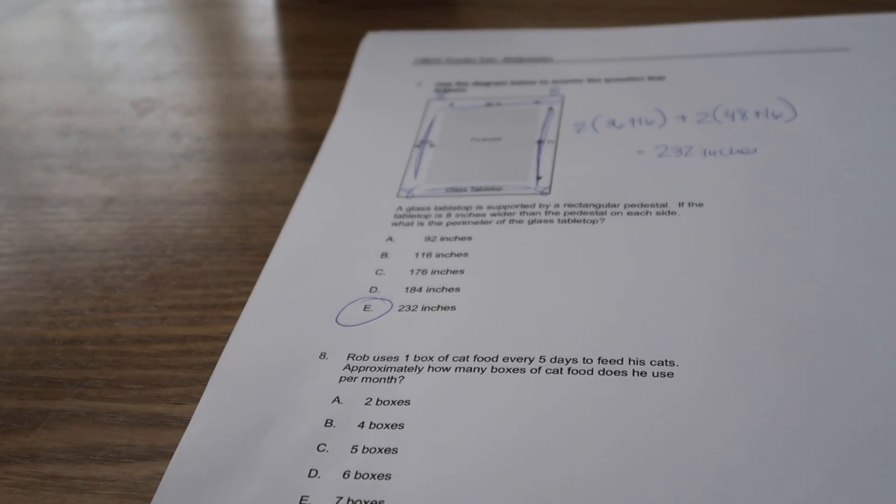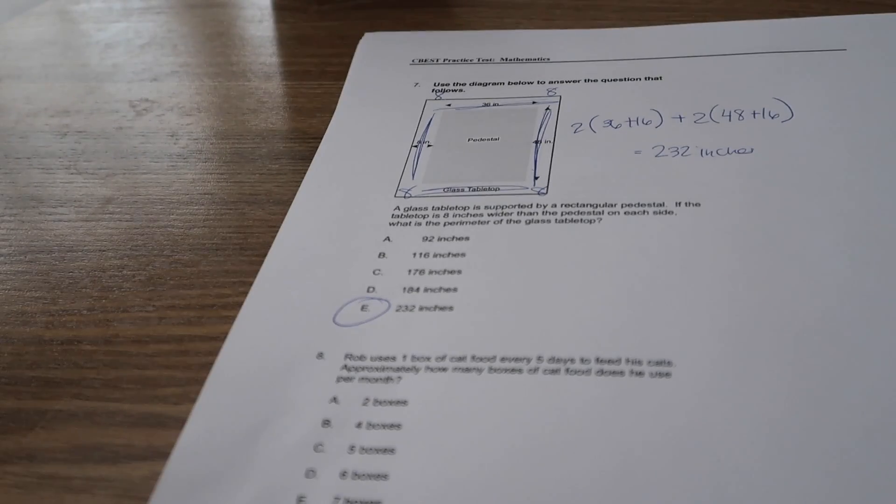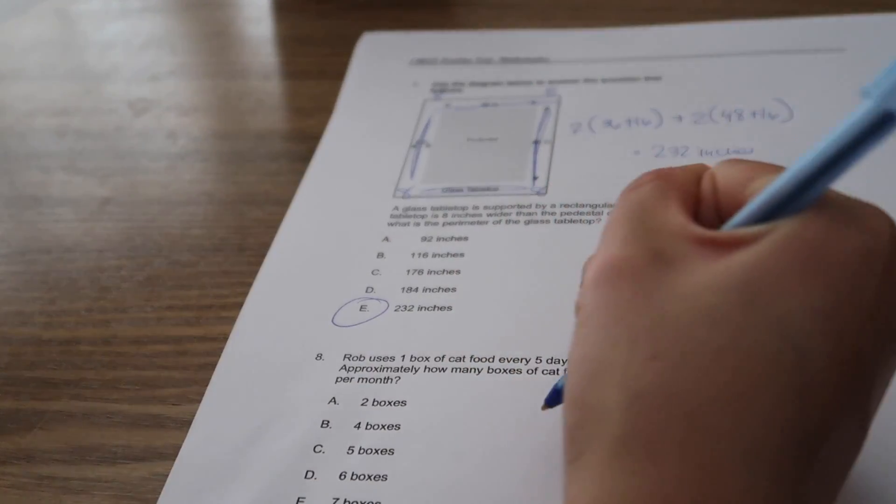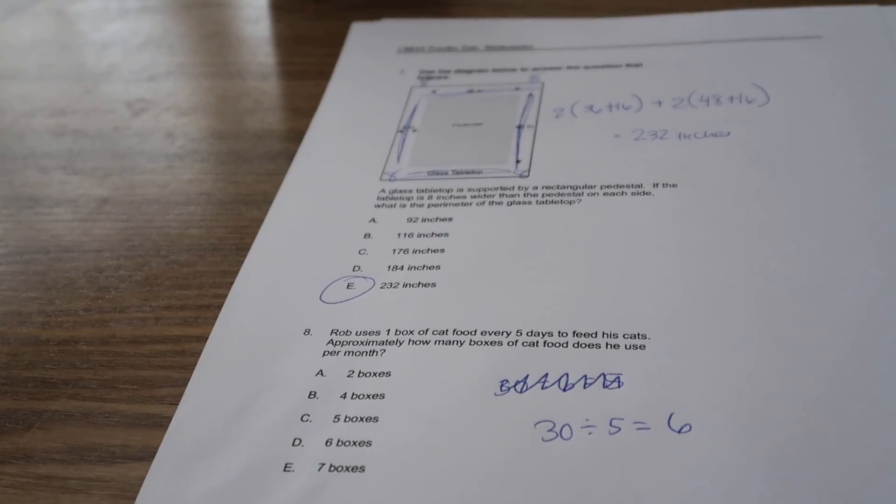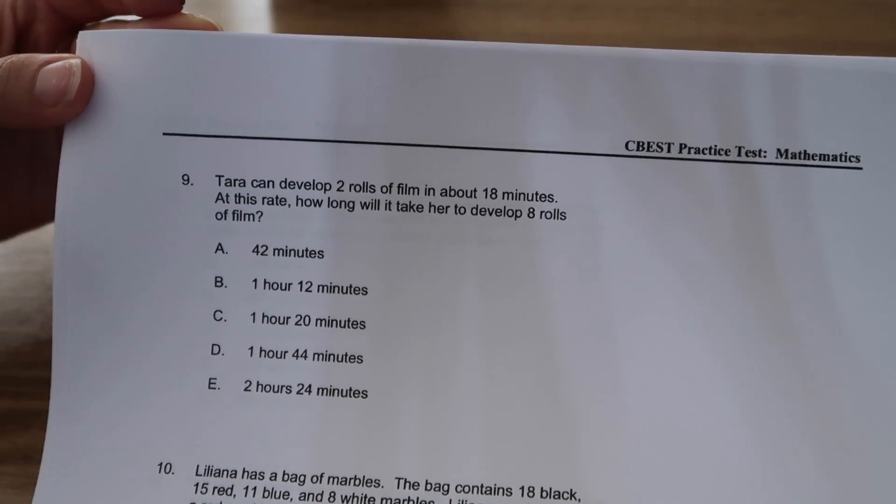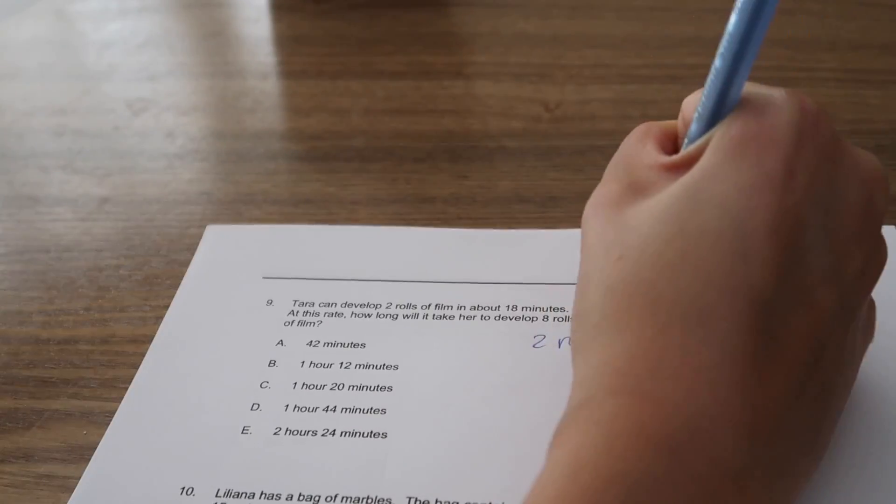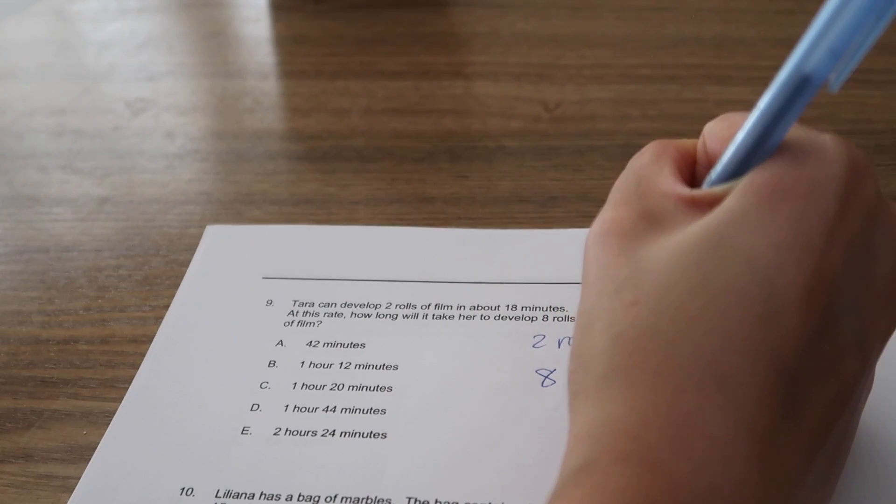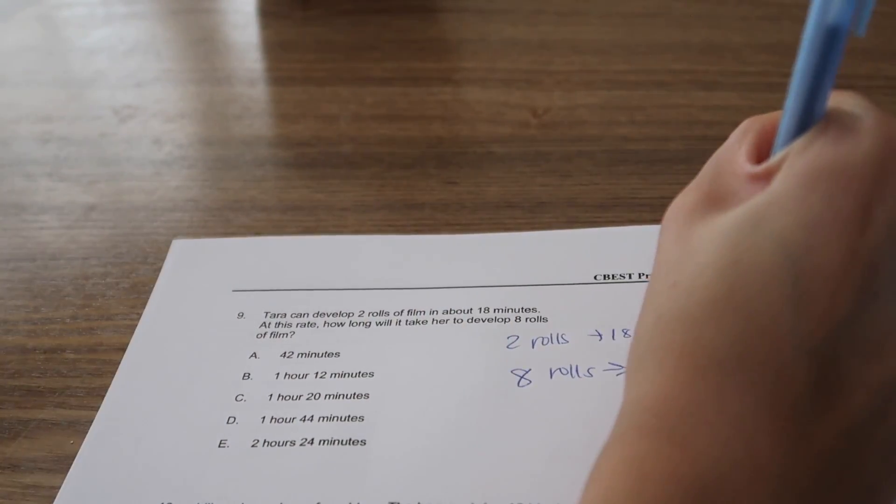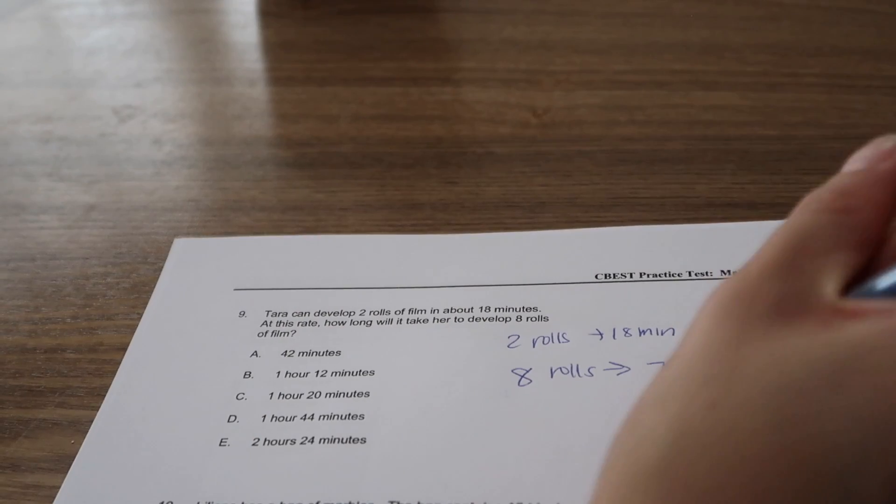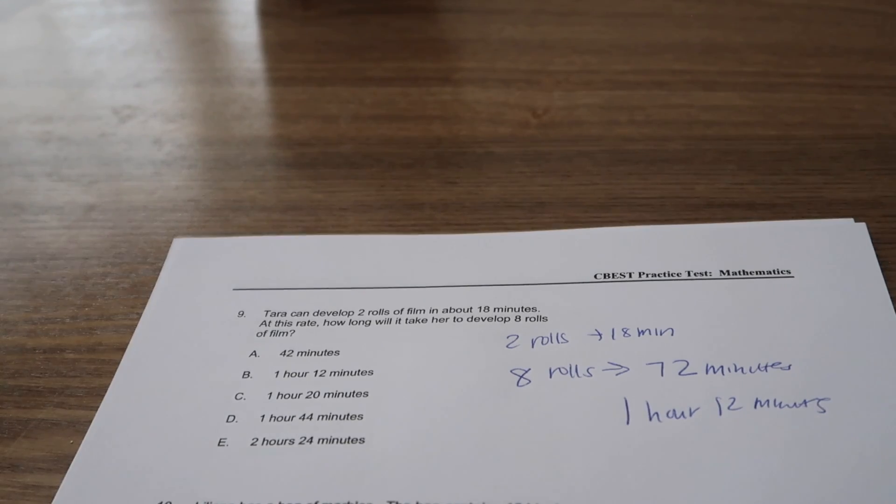Rob uses one box of cat food every five days to feed his cats approximately. How many boxes of cat food does he use per month? We're going to assume that there's 30 days in a month. I know that sometimes it's 31, but you're just going to assume 30 divided by five equals six. So we're going to need six boxes. And develop two rolls of film in about 18 minutes. At this rate, how long will it take her to develop eight rolls of film? This is now four times the amount that she does, so we're going to do 18 times four. 72 minutes, and there's 60 minutes in an hour, so it's one hour and 12 minutes.